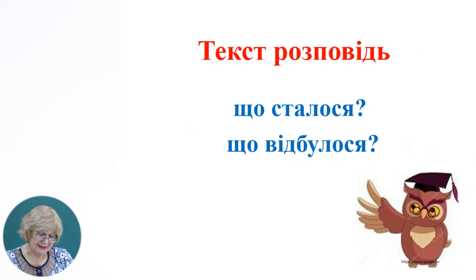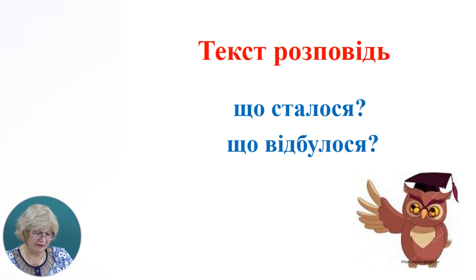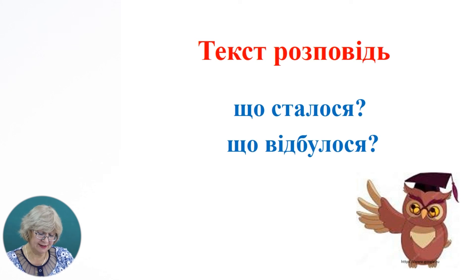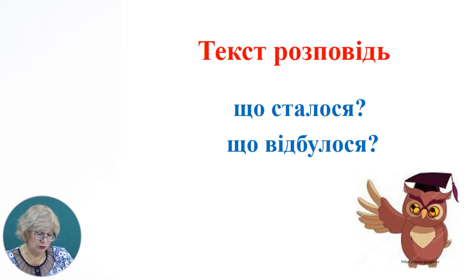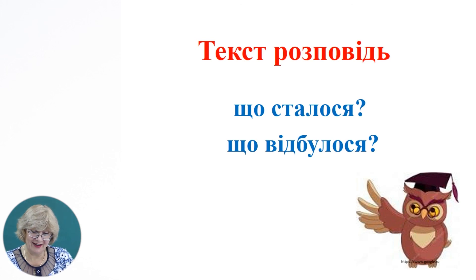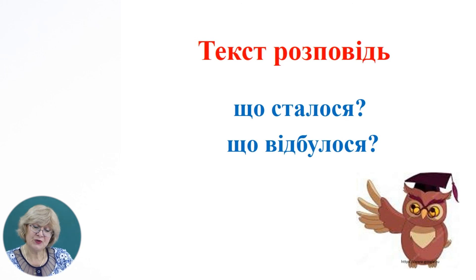Текст, який ми прочитали, за типом — розповідь. Текст-розповідь — це розгорнуте словесне повідомлення про когось або про щось. У нашому тексті — про тварин. У тексті-розповіді йдеться про події, пов'язані між собою, про дії героїв, про те, як зайчик образив їжачка. Розповідь — це тип тексту, в якому описуються дії у певній послідовності. Головні питання тексту-розповіді: що сталося, що відбулося.